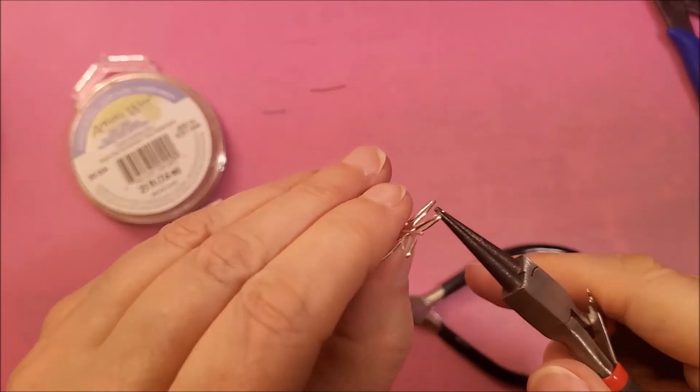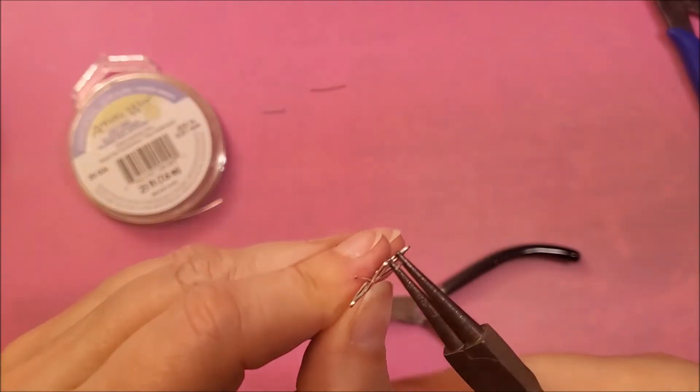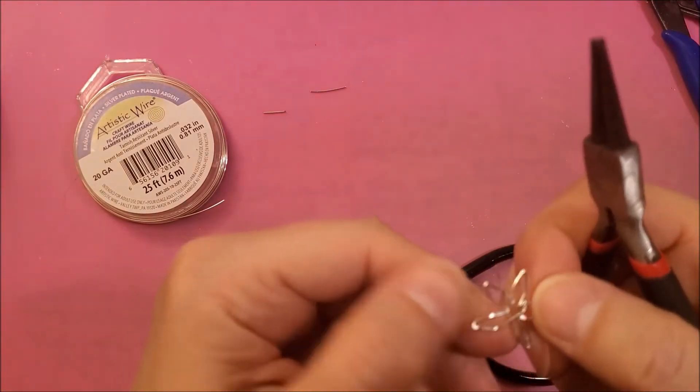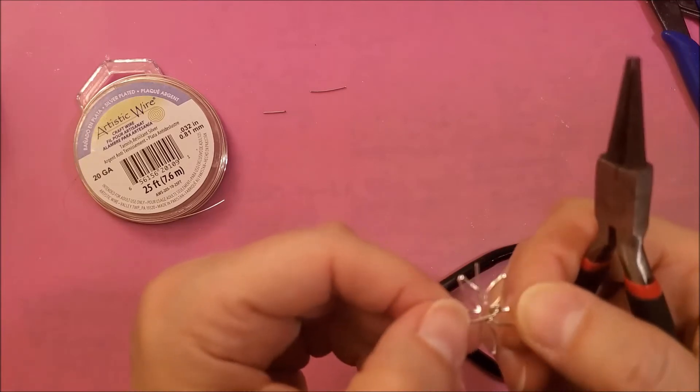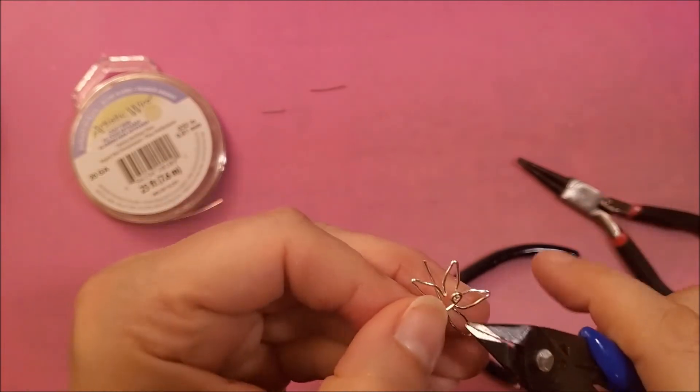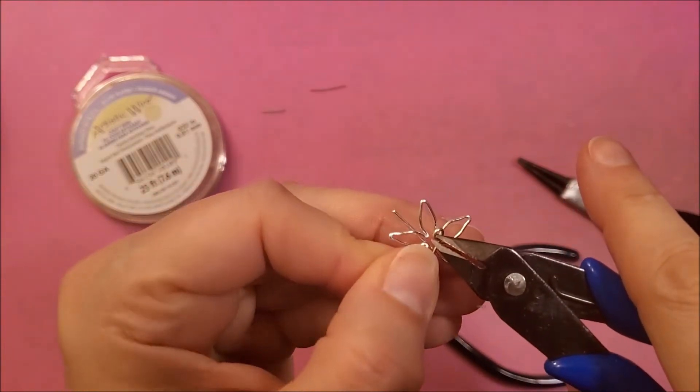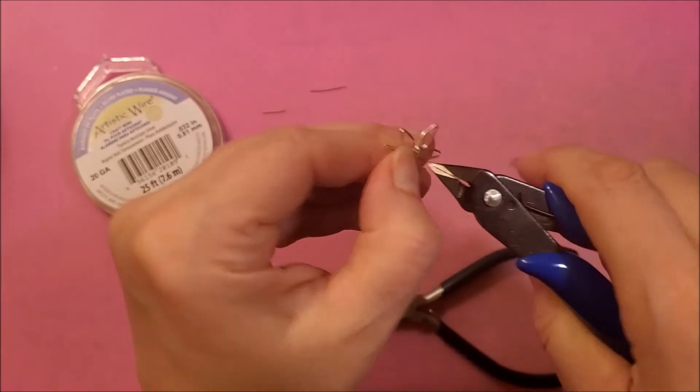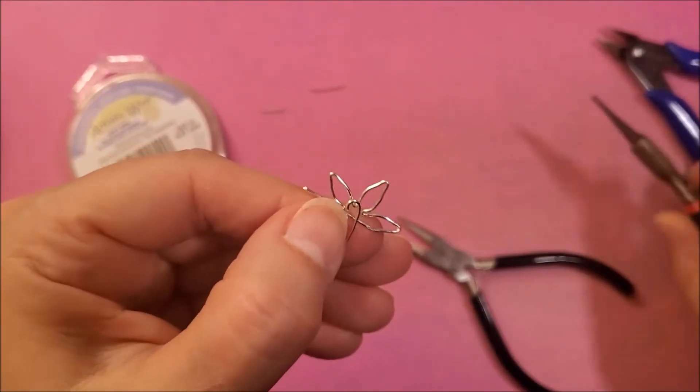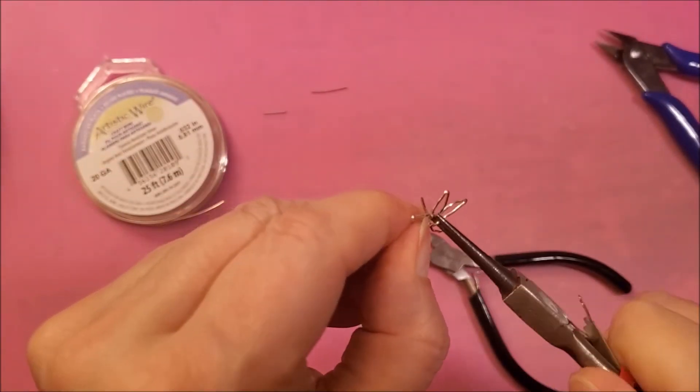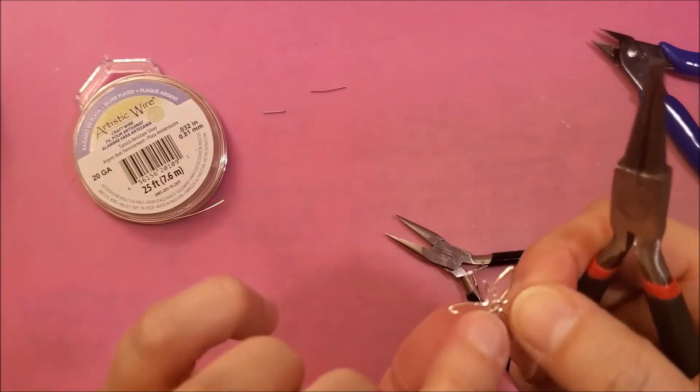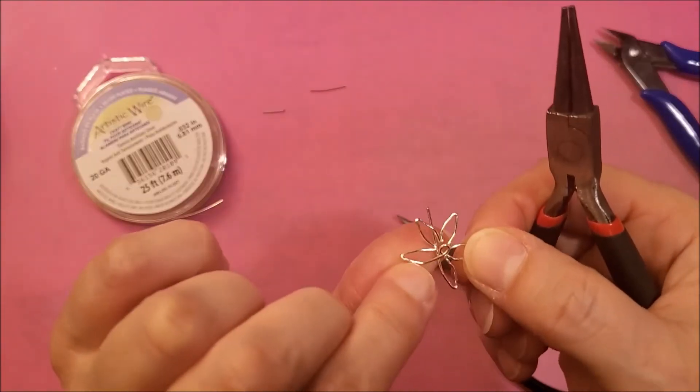About halfway down you can start rounding it. Now if they get in your way you can just move it a little bit. Oops that one got away from me a little bit. Okay so you get this effect and then you can start pushing them towards each other to make the flower.